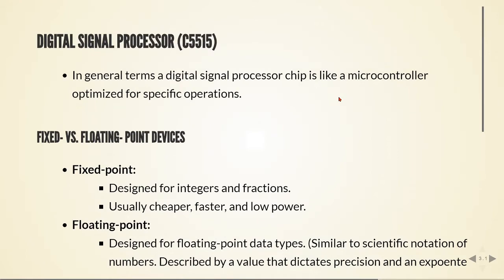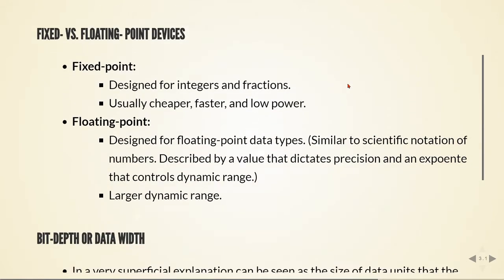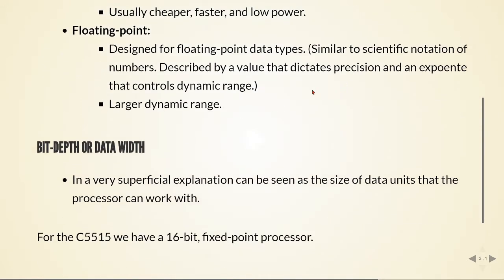Another important part of the digital signal processor is the number of bits. In a very superficial explanation, the number of bits can be seen as the size of the data units that the processor can work with. For example, the C5515 is a 16-bit fixed point processor. There are also processors which are 24 bits, 32 bits, and 64 bits. All these bits are related to registers, memory, and addresses — so it's essentially the size of the data units that the processor can handle.